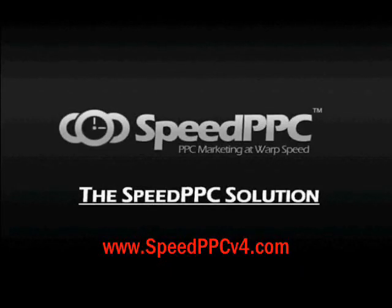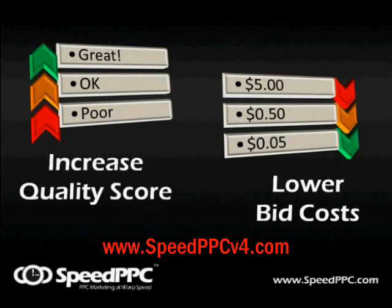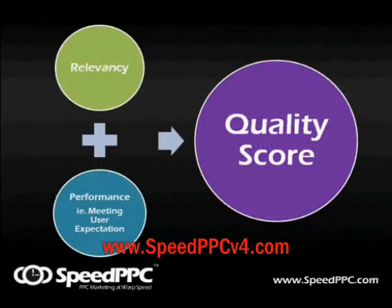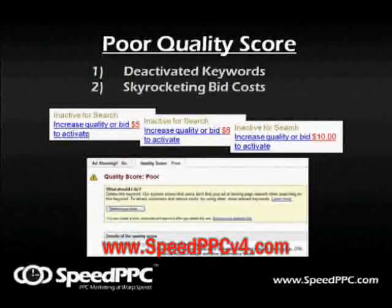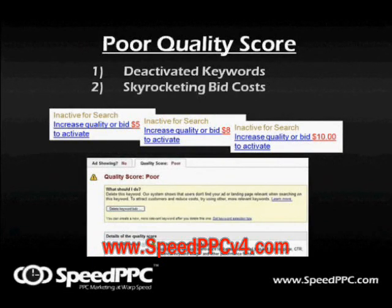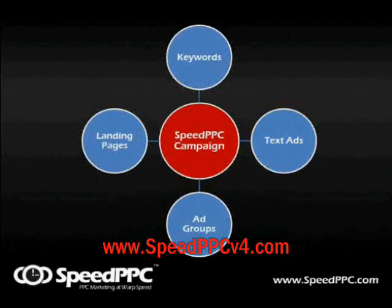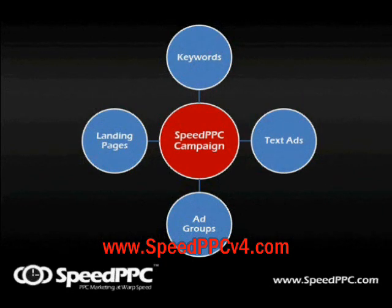Speed PPC gives you the power to directly influence your quality score, which has the bonus side effect of lowering your bid costs. Relevancy and meeting users' expectations are what Google and Yahoo are searching for, according to their quality score measurement. If your keywords are being deactivated and your bid costs have skyrocketed, chances are you're not meeting their expectation. The Speed PPC methodology is built with relevancy in mind. It fuses together a strong campaign by improving the relationship between your keywords, ads and landing pages.